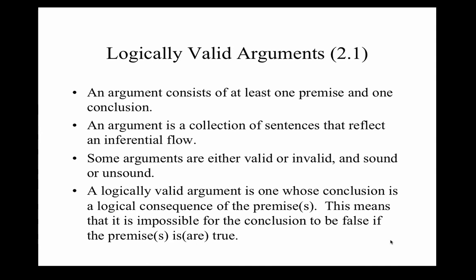Now that we have a visual way of showing how validity and invalidity — or logical consequence and non-consequence — work, let's go back to the abstract concepts. A logically valid argument is one whose conclusion is a logical consequence of the premises. It is impossible for the conclusion to be false if the premises are true. This is just what a valid argument is.